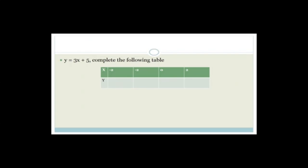The easiest way to explain what a function is, is to give an example. We have the equation y = 3x + 5. I want to substitute x = −2, −1, 0, and 2 into this equation and see what we get for the y values. We get: y = 3(−2) + 5 = −6 + 5 = −1. If x = −1, then y = 3(−1) + 5 = −3 + 5 = 2.